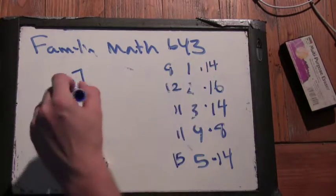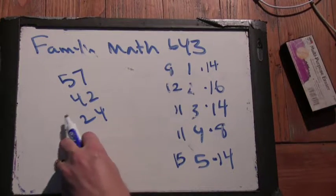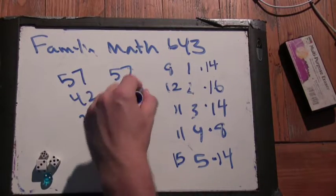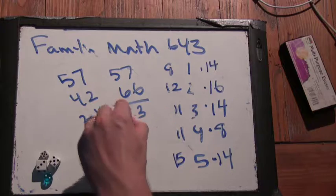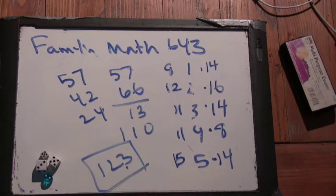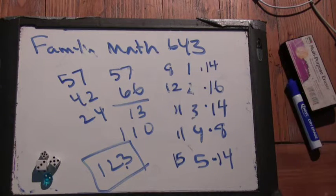Forty-two plus twenty-four. That's gonna be sixty-six. All right. So fifty-seven plus sixty-six is, let's see, one twenty-three. Twelve. Twelve point three. Twelve point three. So that's our first guess with ten rolls.